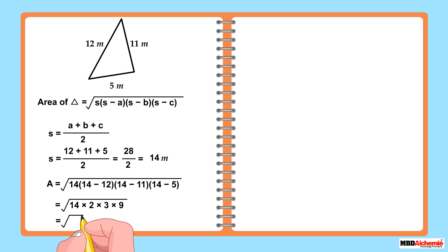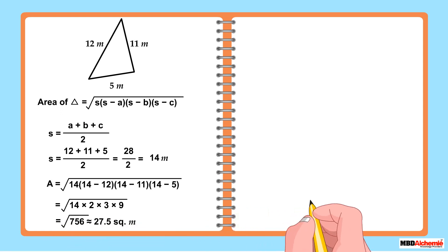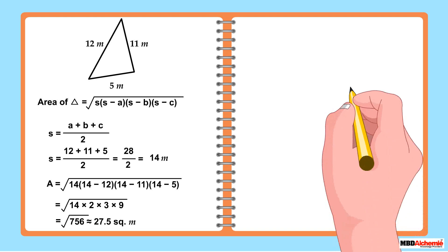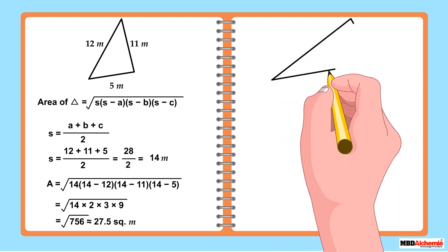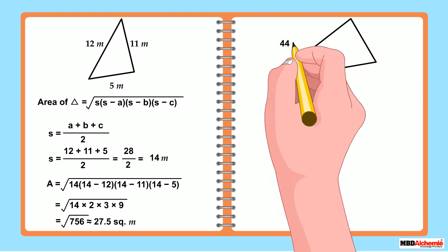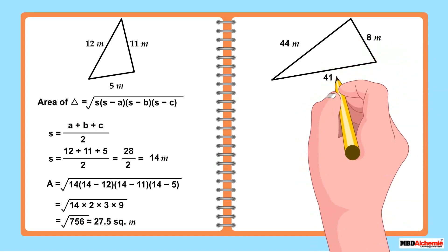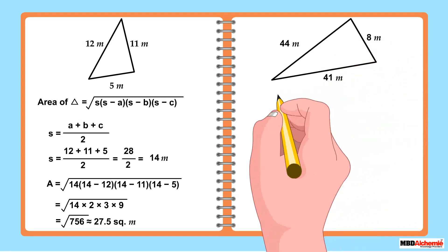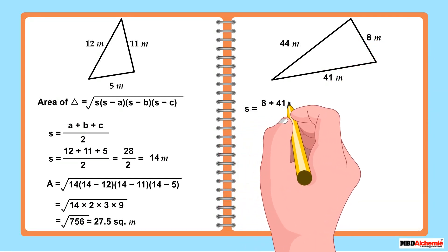Sid gets a rounded-off area of 27.5 square meters for the smaller sail. He then draws a triangle for the larger sail in his notebook and finds its semi-perimeter.